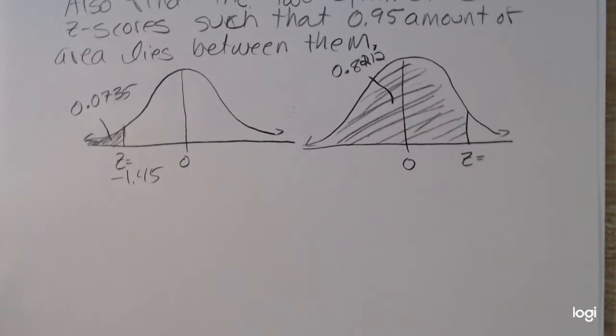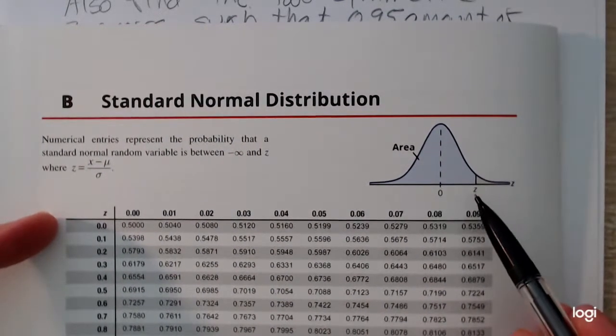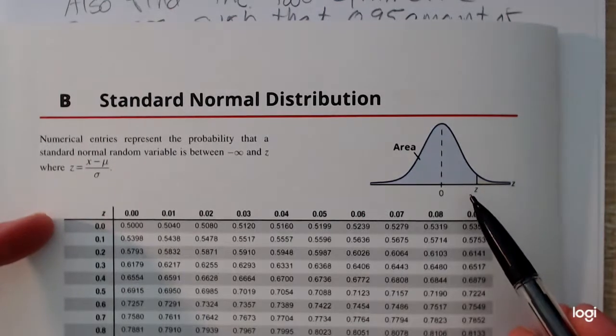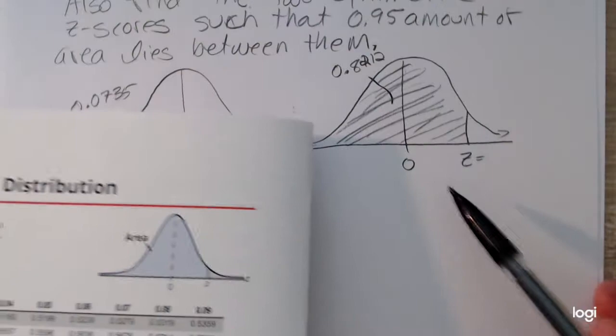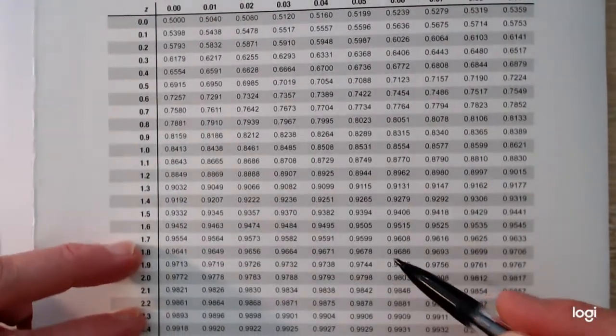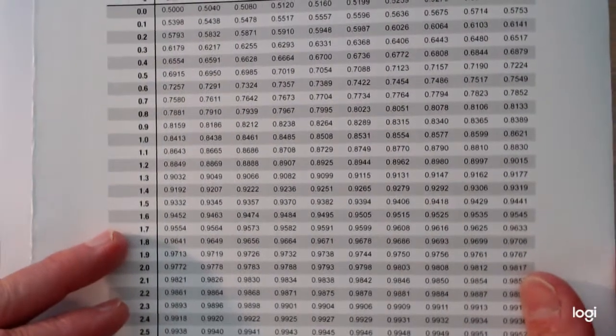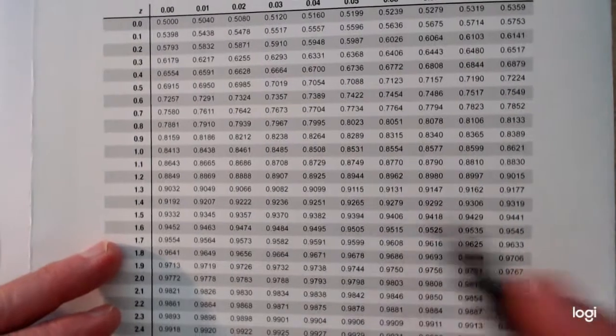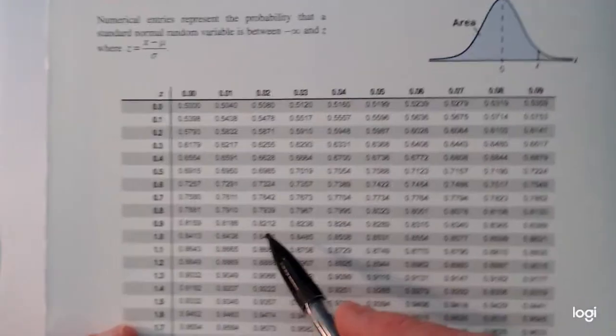So because I expect my z-score to be positive, I'm looking at the page of my table that corresponds to positive z-scores. So I want to read in the body of the table as close as I can get to 0.8212. And I happened to pick values that were exactly in the table to make this a little more manageable. So 0.8212. Of course, now I can't find it. Oh, here it is.